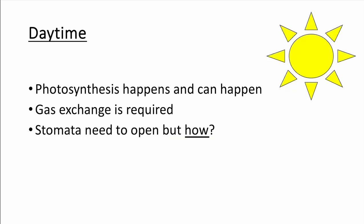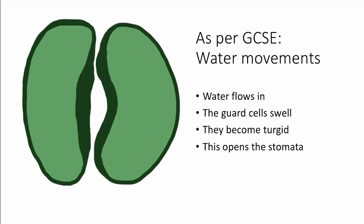So during the day, photosynthesis happens and can happen. I will explain what I mean by that a bit later on. For that, gas exchange is required, so you do need the carbon dioxide to enter into the photosynthesis equation in order to create your sugars. For that, stomata need to be open, and how is the big question, and that's literally the learning aim for this short video.